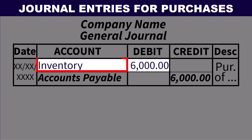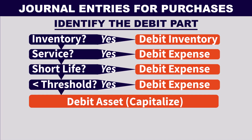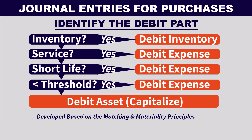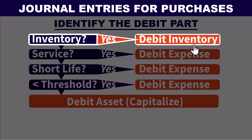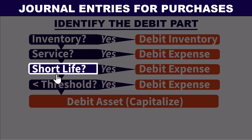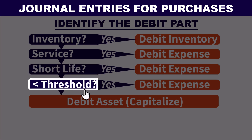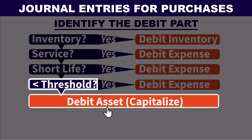To identify the debit part of a purchase transaction, I put together this simple flowchart based on the matching and materiality principles of accounting. Start by asking: is the purchased item inventory? If yes, inventory is debited. If no, ask the next question and continue like that. The last question is: is the cost of the item purchased less than a threshold amount? If yes, expense is debited. If no, the purchased item is debited as an asset, which is called capitalizing, as we saw in the fixed asset example. Threshold amounts are just reasonable dollar values designated by each company so that any cost less than the threshold must be debited as an expense.